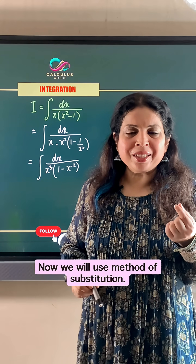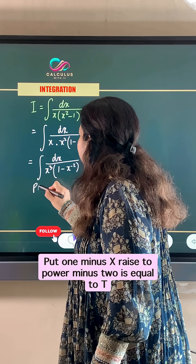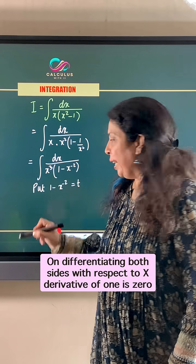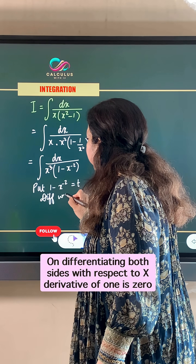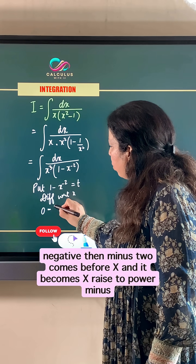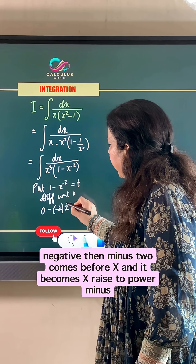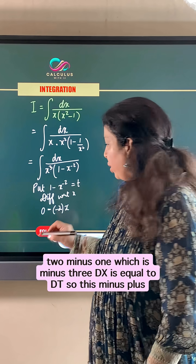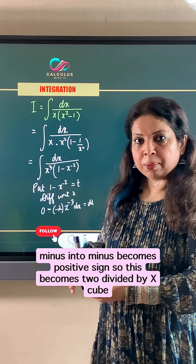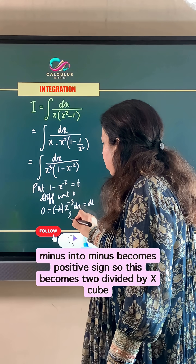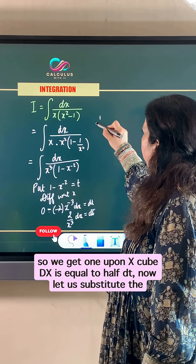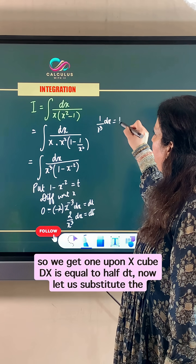Now we will use the method of substitution. Put 1 minus x raised to power minus 2 equal to t. On differentiating both sides with respect to x: derivative of 1 is 0, then minus 2 comes before x and it becomes x raised to power minus 3 dx equal to dt. So minus into minus becomes positive, giving 2 divided by x cubed dx equal to dt. So we get 1 upon x cubed dx equal to half dt.